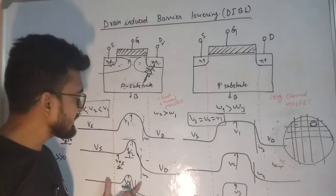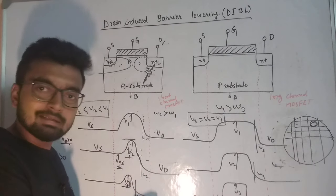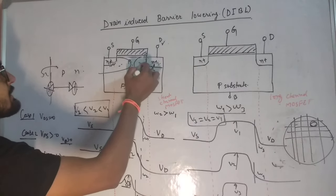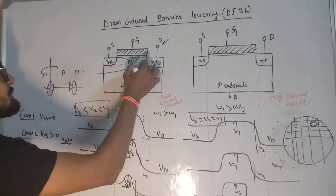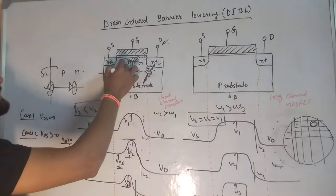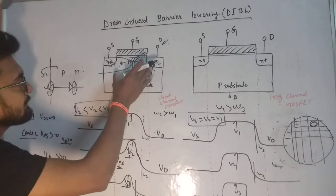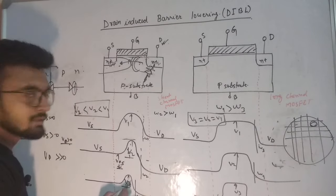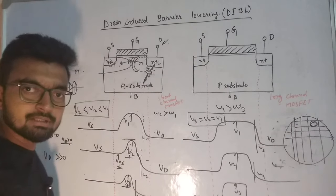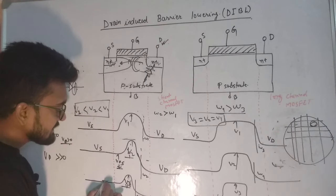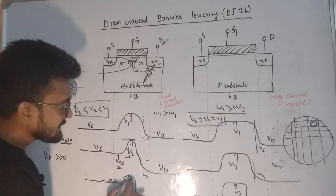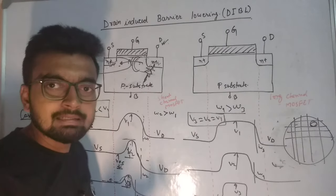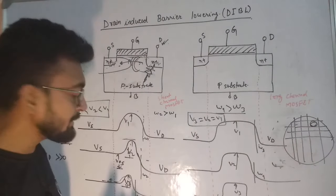The major difference in the short channel device is the decrease in barrier potential along with the decrease in effective channel length. As we keep increasing Vd, the depletion region keeps increasing and there comes a time when the depletion region at the drain joins with the depletion region at the source terminal. Now we have a depletion region which stretches from drain to source. That is why the barrier height keeps decreasing in short channel but not in long channel devices. As this height keeps decreasing, electrons flowing from source don't require much energy to overcome the barrier, and they flow quickly, causing leakage current in the device.